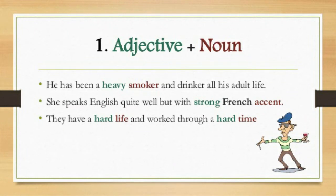The first type of collocation we are going to see is adjective plus noun. A collocation is an arrangement of words occurring side by side. You already know what an adjective and noun are — an adjective is a describing word and a noun is a naming word. So in the first type, we see collocations formed by adjective plus noun.